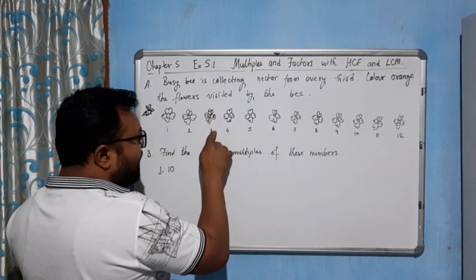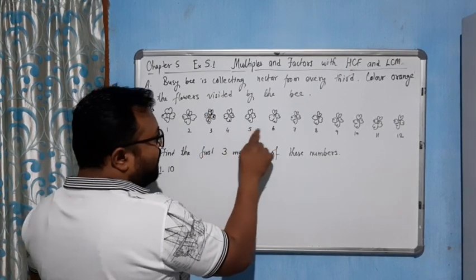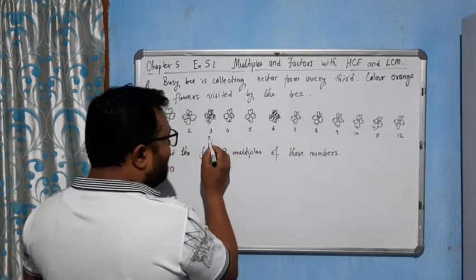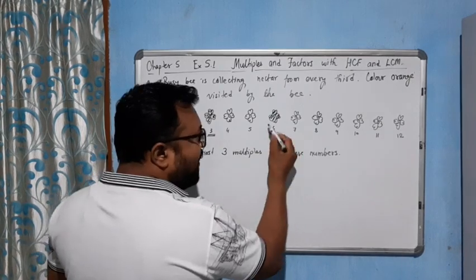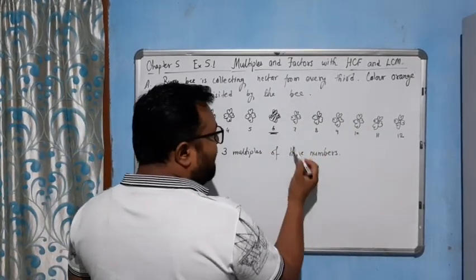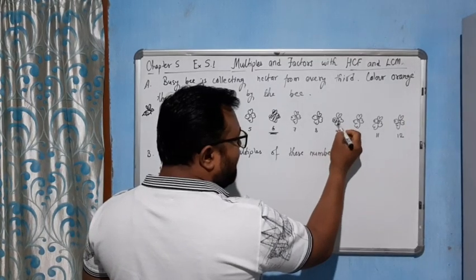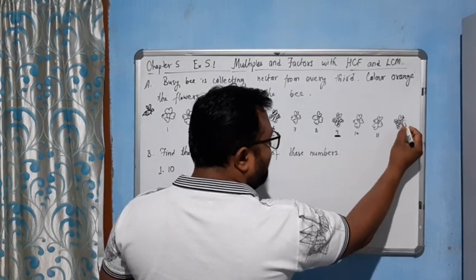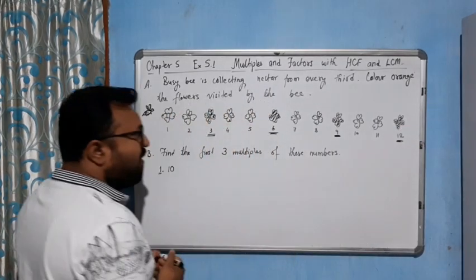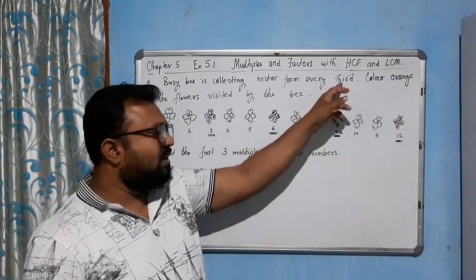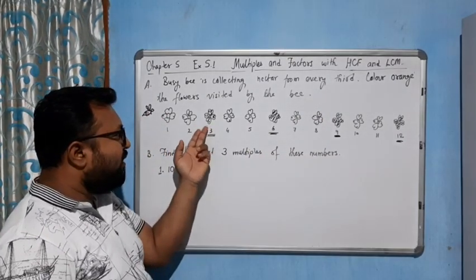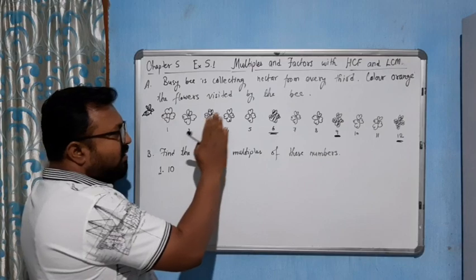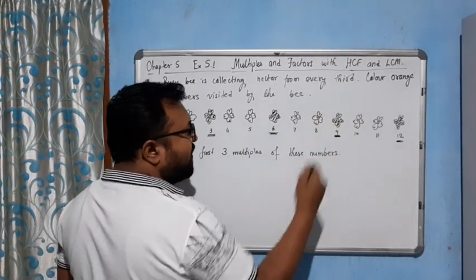The bee is collecting nectar from every third flower, so you color those flowers with orange. One, two, three — this is the first flower. One, two, three — this is the second, which is number six. Then nine, then twelve. Simply put, you color all multiples of three: 3×1=3, 3×2=6, 3×3=9, 3×4=12.